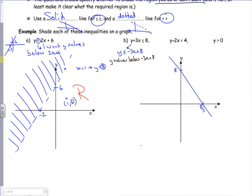So I want a y value that's below minus 3x plus 8. So there's minus 3x plus 8. The y value there is below the y value on the line. So I want the left hand side of this. So I'm going to shade the right hand side like this.